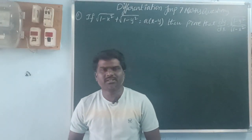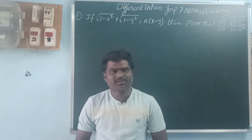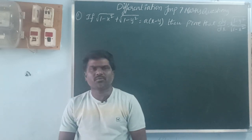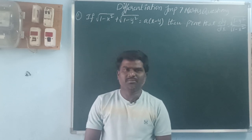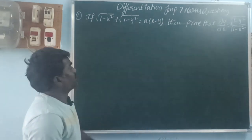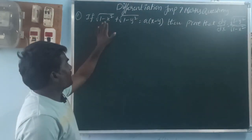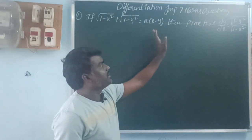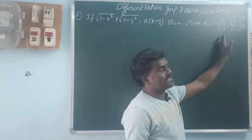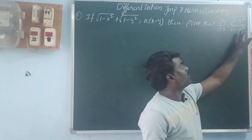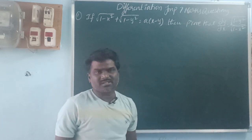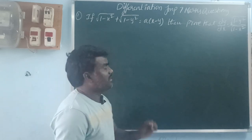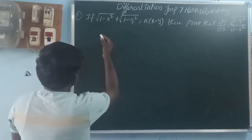Hi, welcome back to our YouTube channel. This is Balakrishna. In this video I'm going to be explaining differential equations — seven important questions for IPE, that is Intermediate 1B. The first question: if √(1 - x²) + √(1 - y²) = a(x - y), then prove that dy/dx = √(1 - y²) / √(1 - x²). These questions are important and compulsory for IPE exams.